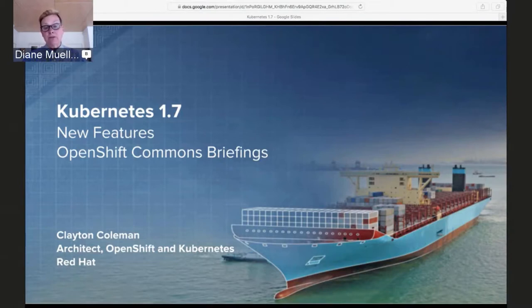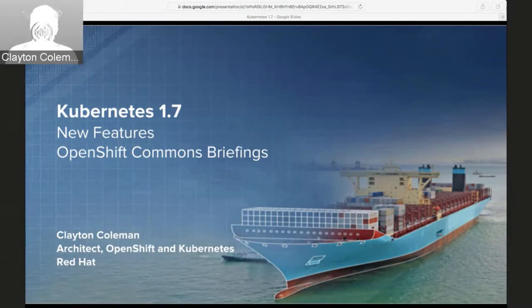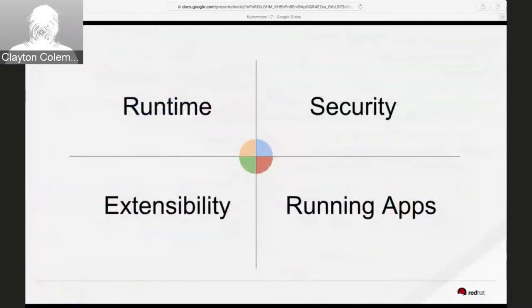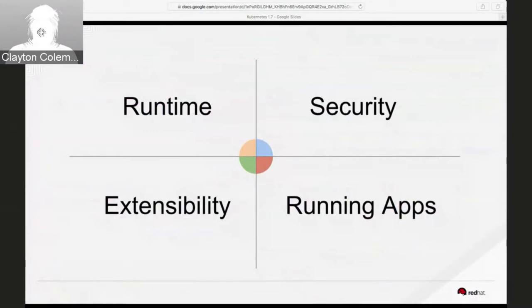My name is Clayton Coleman, I'm a Kubernetes and OpenShift architect at Red Hat. I've been working on Kubernetes since the very beginning, and this is a very exciting release. There's a ton of both great new features as well as changes coming to Kubernetes that make it even more of a platform. The features I'll talk about today are just a taste of what's in Kubernetes 1.7 — there's a huge number of bug fixes and performance improvements.